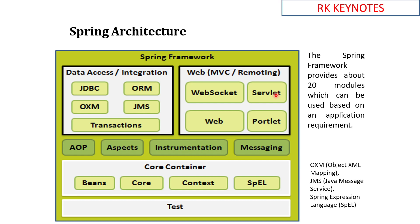AOP — Aspect Oriented Programming — means dividing business logic into different small units called aspects, and then joining all the aspects together when executing the project. We also have Instrumentation, which supports the class loader, taking care of loading the required classes. There is also a Messaging feature called STOMP — Streaming Text Oriented Messaging Protocol — which is used when you want to send messages between client and server through WebSockets.